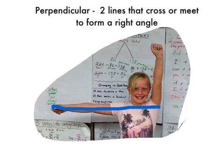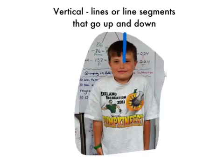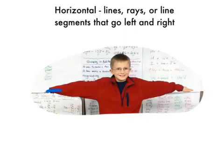Perpendicular means two lines that cross or meet at a right angle. Perpendicular means lines that are extending up and down. Horizontal extends in two directions, left and right.